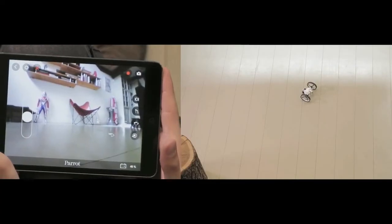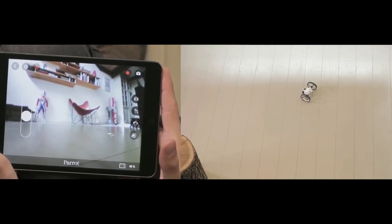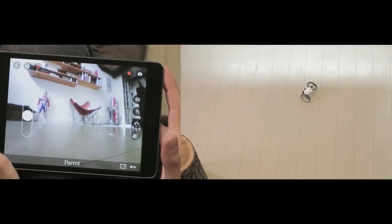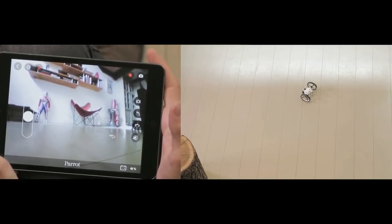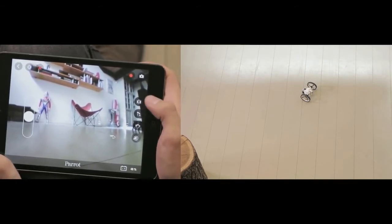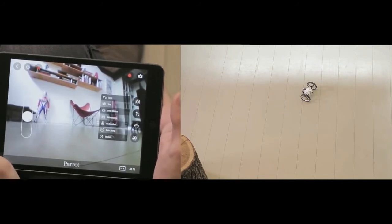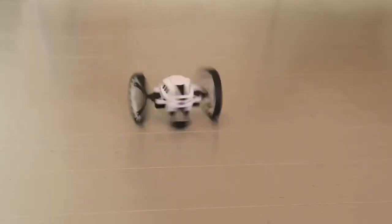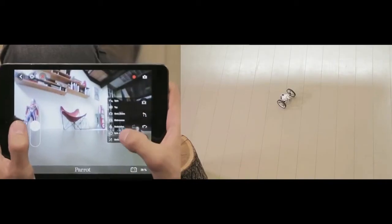Several fun acrobatic animations are pre-recorded in the Jumping Sumo. To activate them, go to the animation menu and make your selection. Jumping Sumo will run automatically. Some of the acrobatic animations include spin, spin jump.